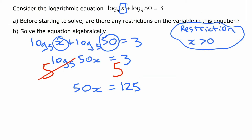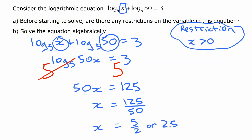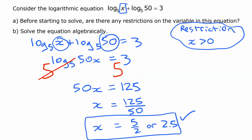We've reduced it down to a linear equation. We divide both sides by 50 to get x equals 125 over 50, which reduces to 5 over 2, or 2.5. Now before we say we're done, we look back at our restriction — the solution has to be bigger than zero, and it is, so that checks out. That's the solution. You can check your solution by substituting it back in.